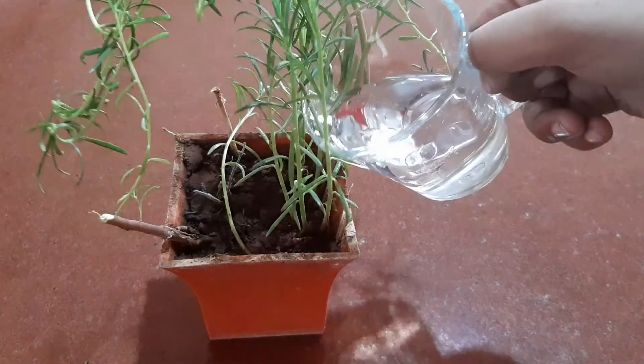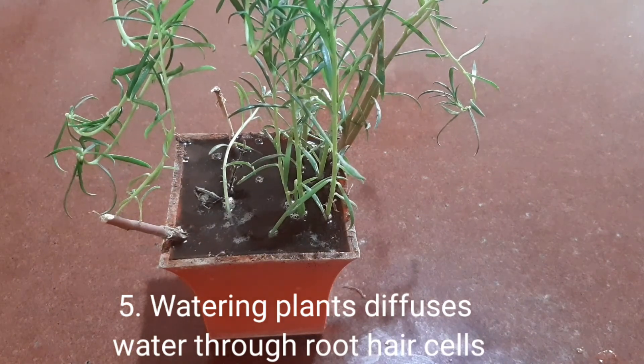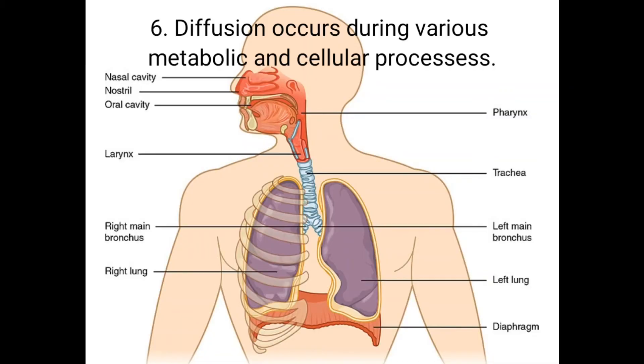Watering plants diffuses water into them through their root hair cells. All organisms exhibit one or the other form of diffusion allowing the movement of the molecules during various metabolic and cellular processes.